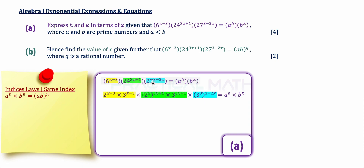On the left-hand side, the blue term — 27 — can be re-expressed as 3 cubed, open bracket, to the power of 3 minus 2x. As we can see, all bases are now prime numbers: we have 2s and 3s throughout. Since they are all multiplied — products of each other — we can use the next law of indices.